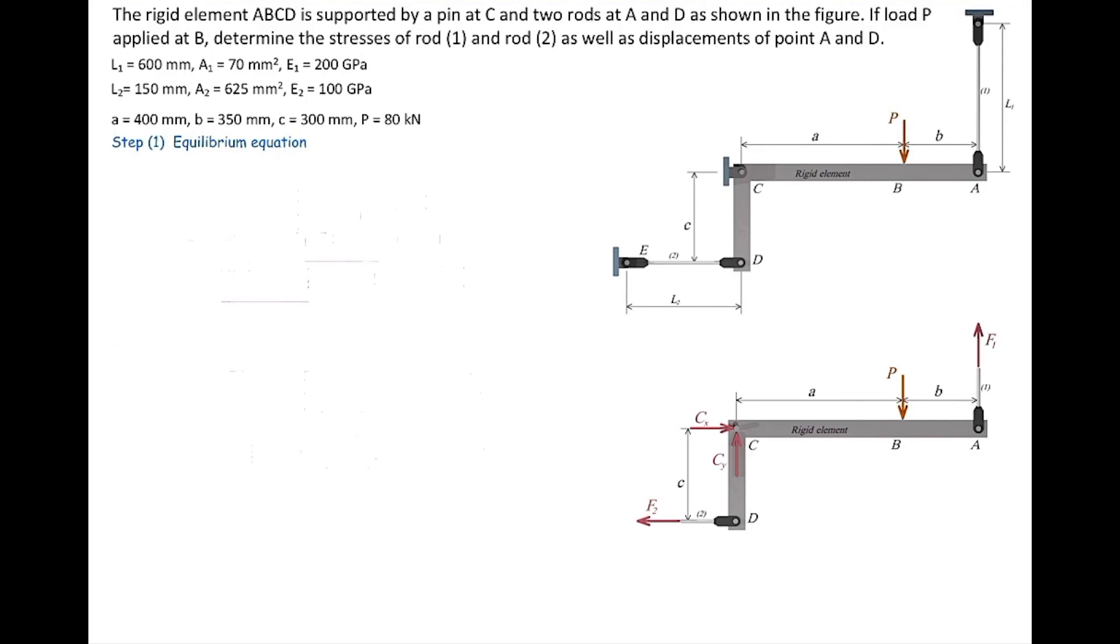One of them is in the horizontal direction, called Cx, and the other is in the vertical direction, called Cy. In addition, there will be two forces on the cut sections in elements 1 and 2, outward from the surface, called F1 and F2. This is the free body diagram for this element. Now we need to see how many unknowns we have and how many equations, and if we can solve the problem just by using equilibrium equations.